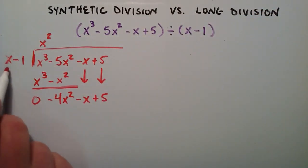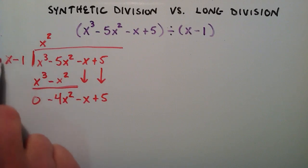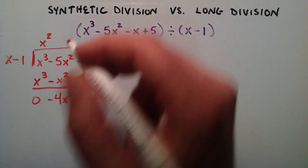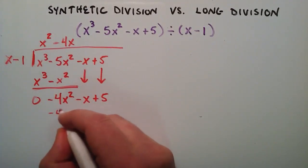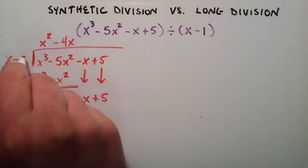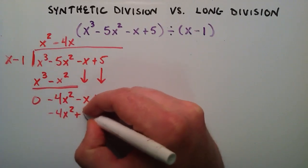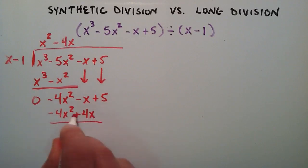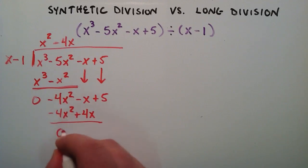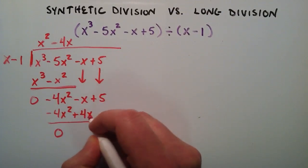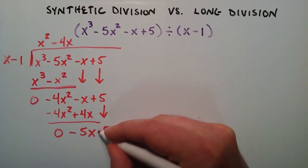Now we're looking at the highest term and asking: what do we have to multiply x by in order for it to equal negative four x squared? That turns out to be negative four x. Negative four x multiplied by the first term gives negative four x squared. Then we take negative four x and multiply it by the second term: negative four x times negative one gives us positive four x, so we put plus four x. Subtracting: negative four x squared minus negative four x squared is zero. Then negative x minus four x gives us negative five x. We drop the five down, so plus five.